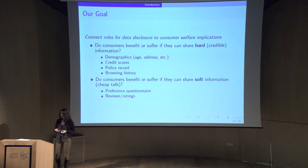So where does this lead us? The goal of this project is to connect this very basic intuition with an idea about signaling of types and privacy. We're going to consider two kinds of information. Hard information, that is to say, credible things that can be checked, like demographics, maybe credit scores, police records, things that if you lied about, they could be verified. And soft information, which is something like cheap talk, maybe survey results, things that you can lie about and nobody will be able to check. And we're going to ask, do consumers benefit or suffer when they have the ability to send these kinds of signals, hard or soft ones, to competing firms?